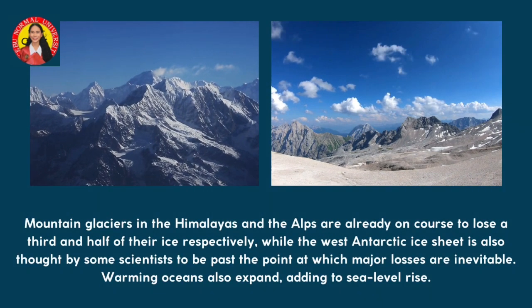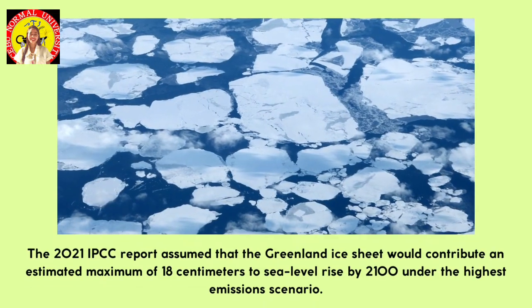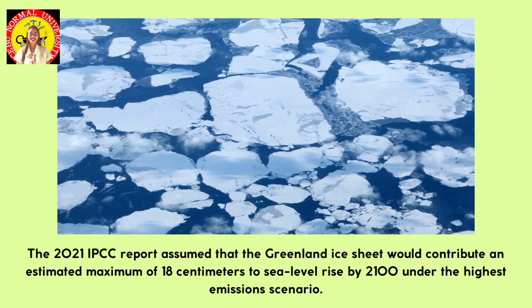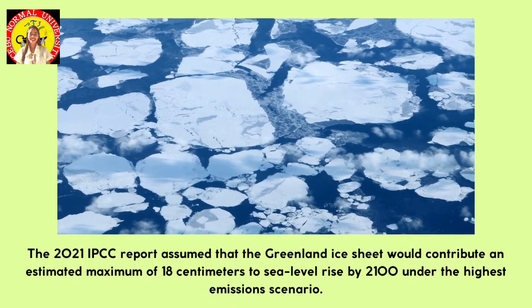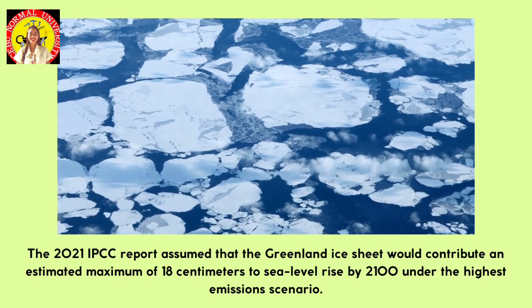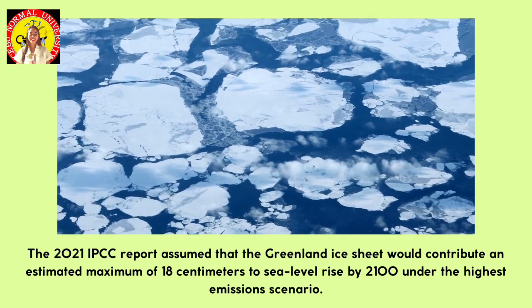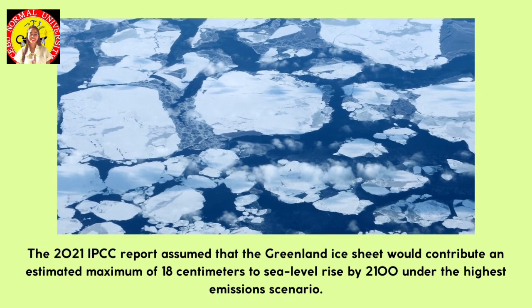And now, to give more information about this topic, I present Teacher Carleen Varkes. An IPCC report assumed that the Greenland ice sheet would contribute an estimated maximum of 18 cm to sea level rise by 2100 under the highest emission scenario. However, new measurements suggest that a sea level rise of at least 27 cm and possibly as much as 78 cm is more likely.